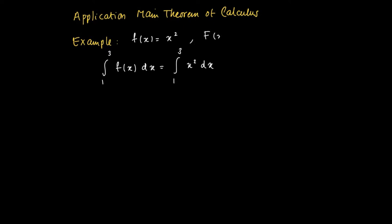We know that f has a primitive capital F equals one-third x to the power 3. The Main Theorem of Calculus states that we may evaluate the primitive at the boundary values. So the integral equals F(3) minus F(1), which equals 27/3 minus 1/3 equals 26/3.